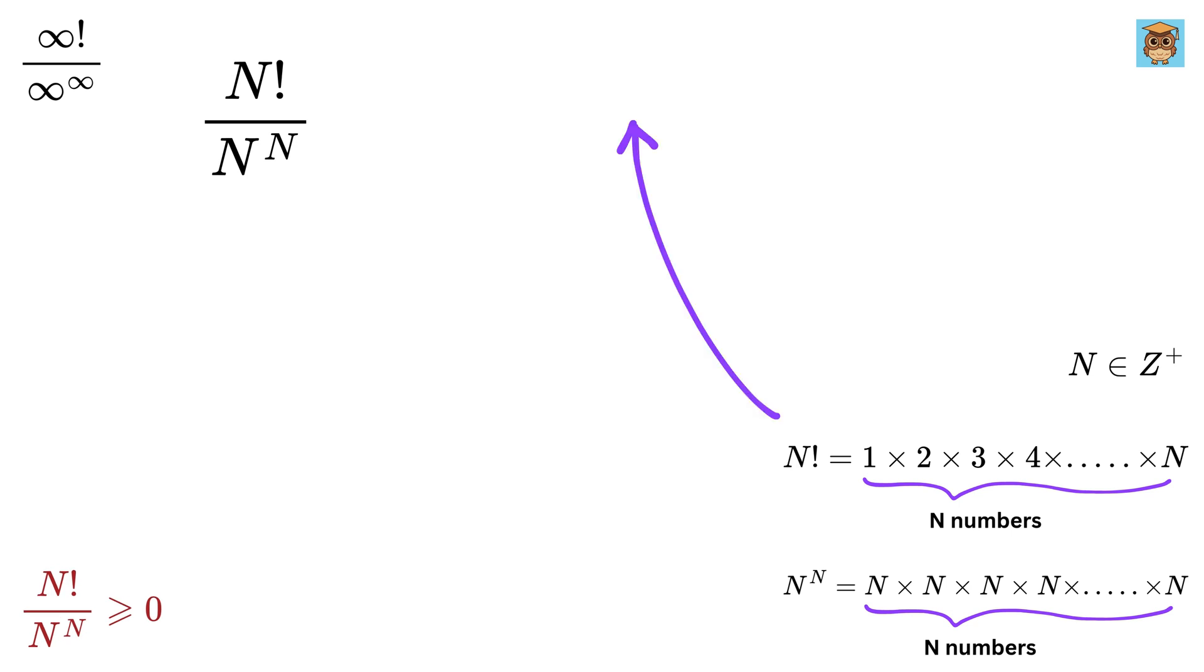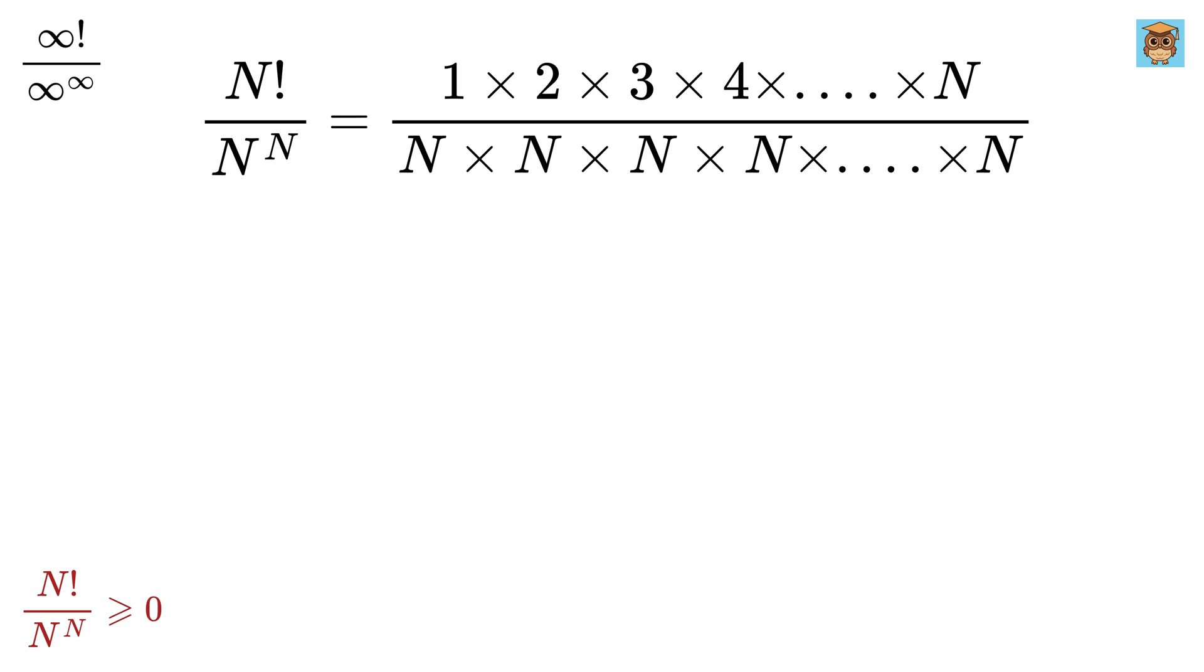Also, let us substitute n factorial here in the numerator to get this and then substitute n to the n power here in the denominator to get this. What do you observe? Both of them are equal to n terms, right?